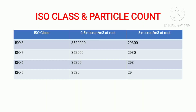Generally we have four ISO classes: ISO 8, ISO 7, ISO 6, and ISO 5. For ISO 8 class, the 0.5 micron particle count in one cubic meter volume at rest condition is 3,520,000, and the 5 micron particle count in one cubic meter volume at rest condition is 29,300.